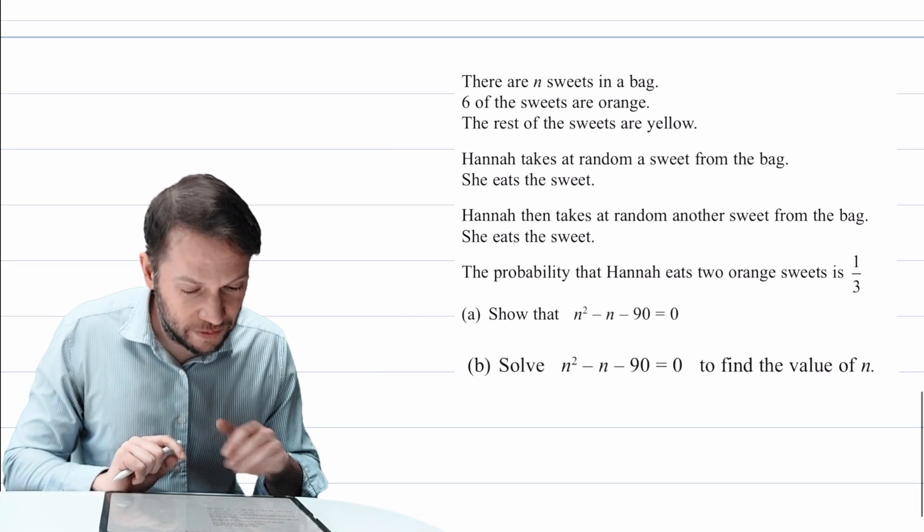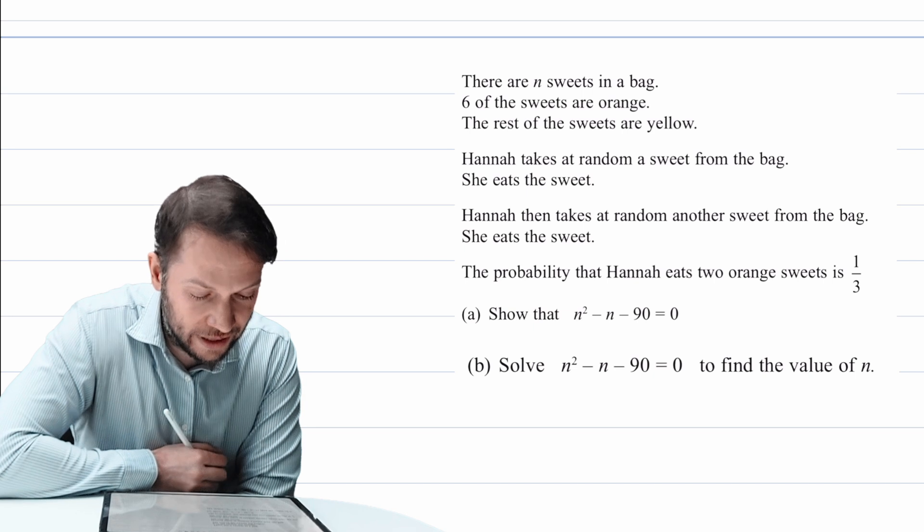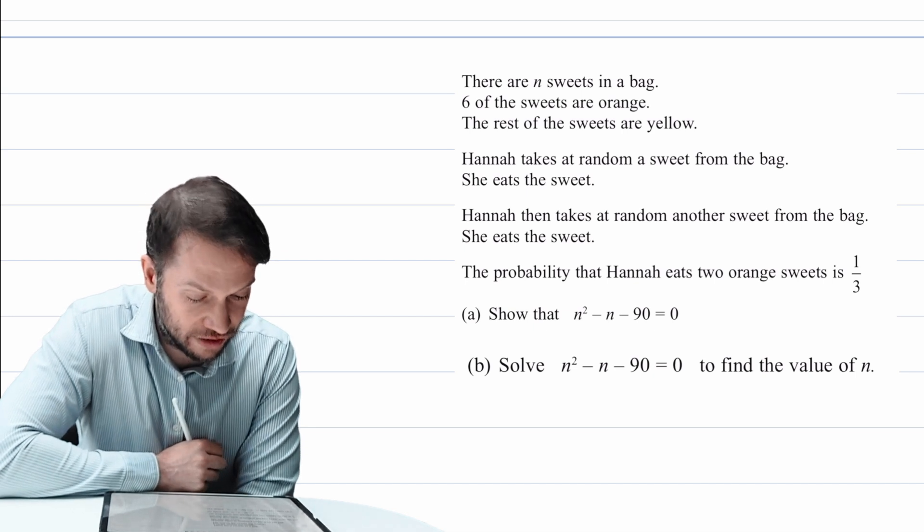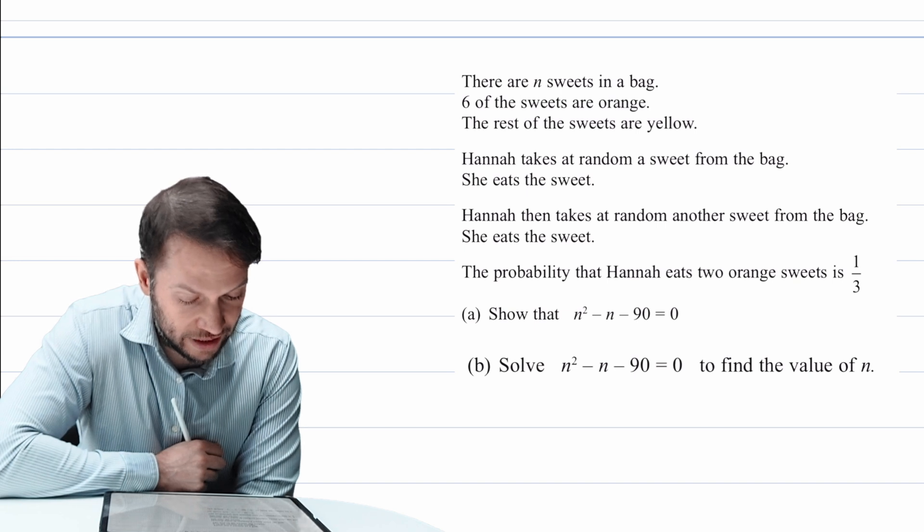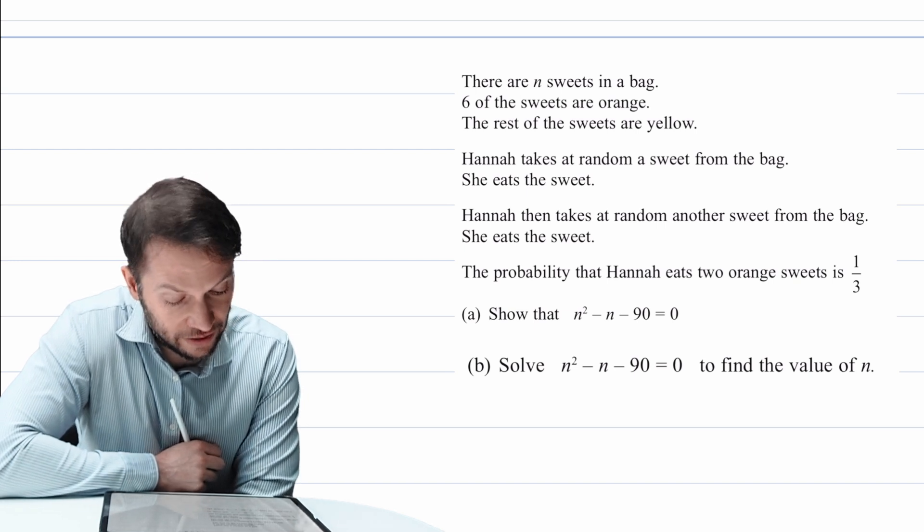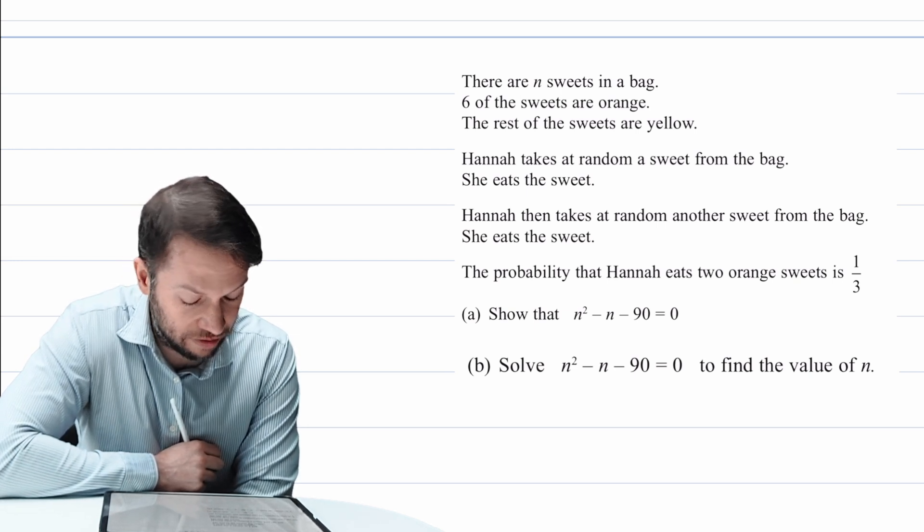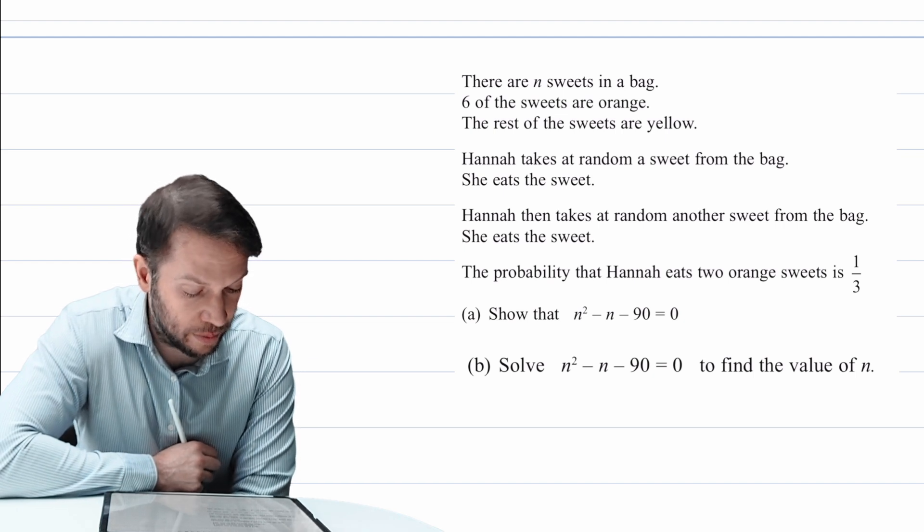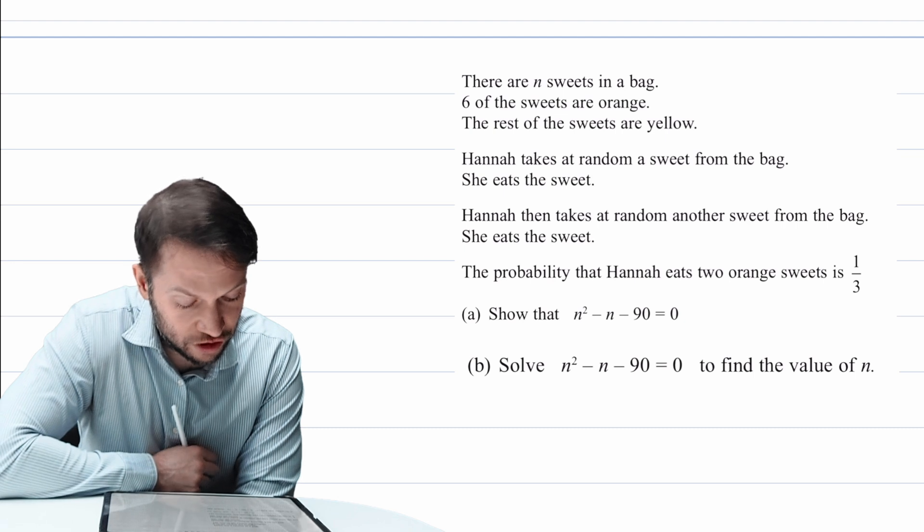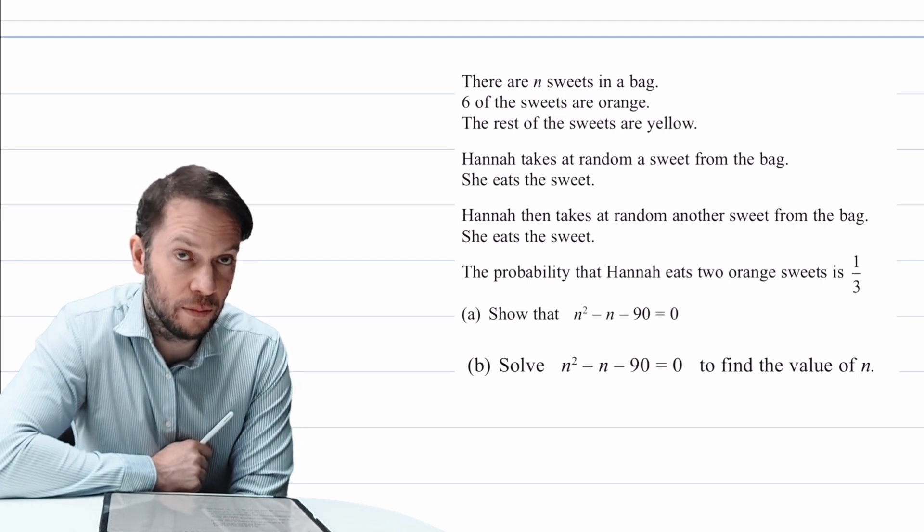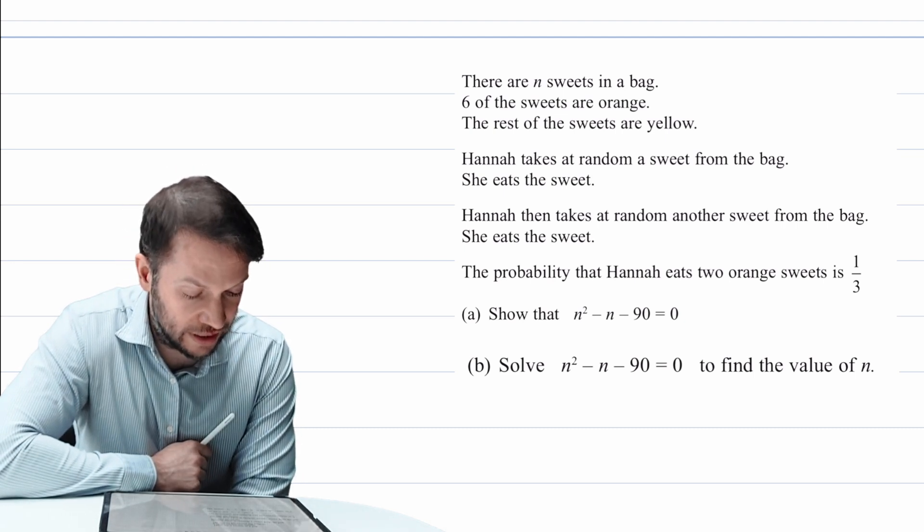So let's tackle this question. There are n sweets in a bag. Six of the sweets are orange. The rest of the sweets are yellow. Hannah takes at random a sweet from the bag. She eats the sweet. Hannah then takes at random another sweet from the bag. She eats the sweet. The probability that Hannah eats two orange sweets is a third. We want to first show that n² - n - 90 = 0.